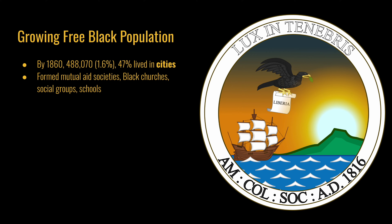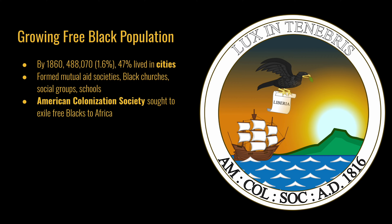Free blacks were able to build stronger communities in cities where they could form mutual aid societies, black churches, and social groups like the Freemasons in schools. One of the earliest black churches, the African Methodist Episcopal Church, was founded in 1816 by Richard Allen in Philadelphia.